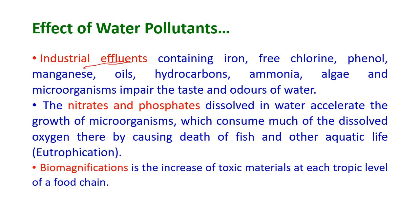Industrial effluents containing iron, free chlorine, phenol, manganese, oils, hydrocarbons, ammonia, algae and other microorganisms impair the taste and odor of water, thereby reducing water quality. Nitrates and phosphates dissolved in water accelerate the growth of microorganisms, which consume much of the dissolved oxygen, causing death of fish and aquatic life — known as eutrophication. Biomagnification is the increase of toxic materials at each trophic level of the food chain.